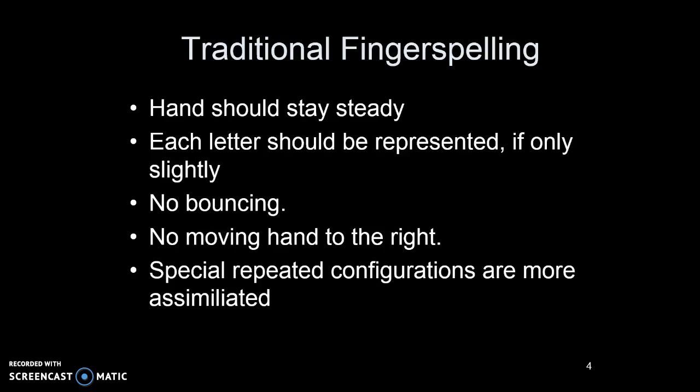That's important with traditional fingerspelling. It's important that your hand stays steady — there's no bouncing or extraneous movements added. Each letter is represented, even if only slightly. The hand doesn't need to move out to the right, as some novice signers tend to do. Notice that there are special repeated configurations, such as a double E or 'ing,' where there's a certain movement even in traditional fingerspelling. But for the most part, traditional fingerspelling shows you every letter. It's used whenever a word or name comes up that hasn't been used in the conversation before.